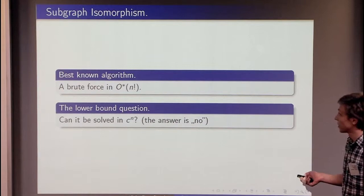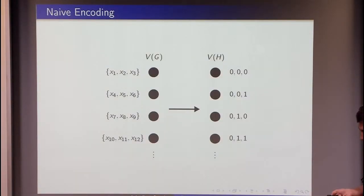The best known is brute force checking all the permutations, actually all the assignments. And the question was whether it can be solved in C to the n. And the answer is no, it cannot.